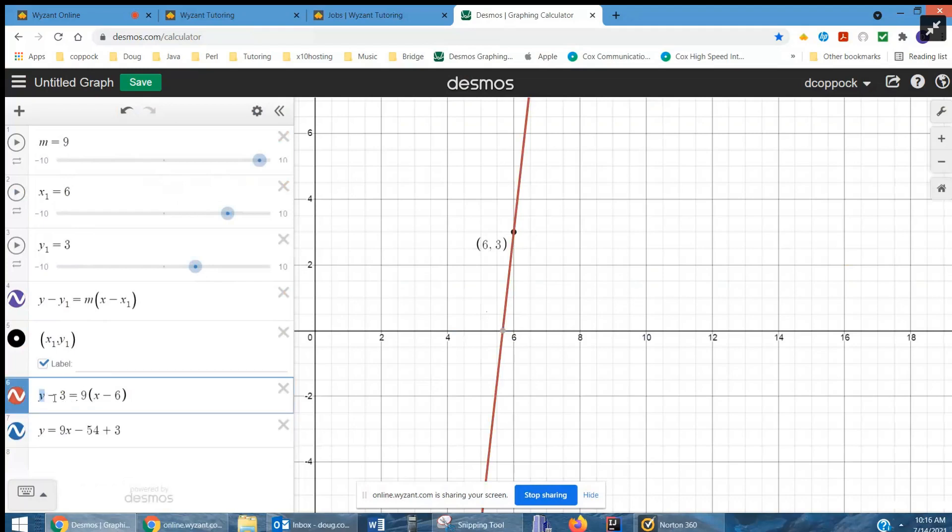Here I've written the equation for this specific instance: y minus 3 equals 9 times the quantity x minus 6.